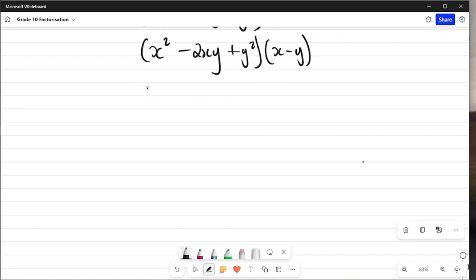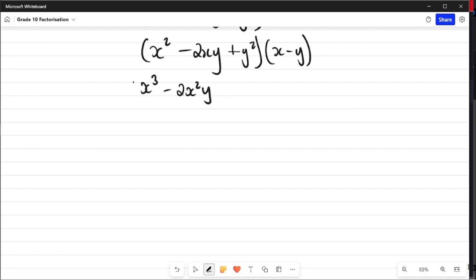From here we are now going to multiply the small bracket into the bigger bracket. So using the FOIL method as well, this is going to be x³ - 2x²y + xy². And then we multiply by negative y, meaning we are going to have -x²y + 2xy² - y³.